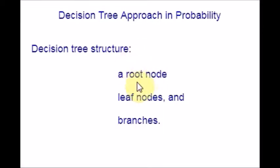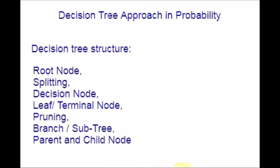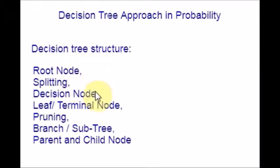There are also many terms that we will see when dealing with a decision tree structure. Apart from the three important key parts, I will also give you the common terms used in a decision tree. These are: root node, splitting, decision node, leaf or terminal node, pruning, branch or subtree, and parent and child node.